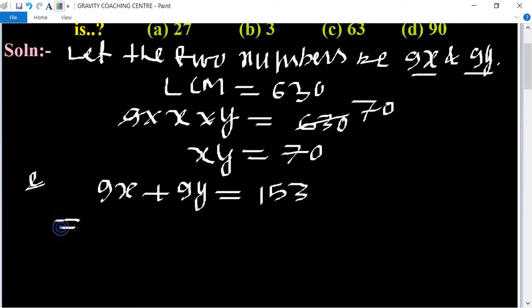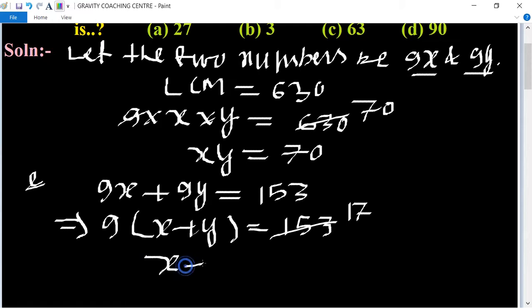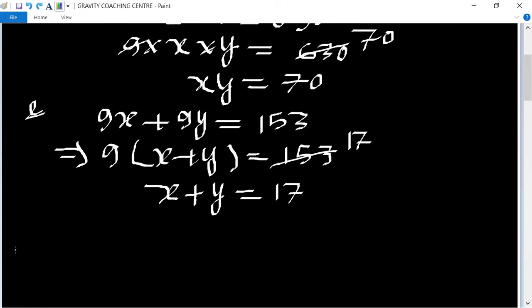So taking 9 as common, X plus Y equal to... 9 into 17 is 153, so X plus Y equal to 17. Now we use the identity: X minus Y whole square equal to, its formula is